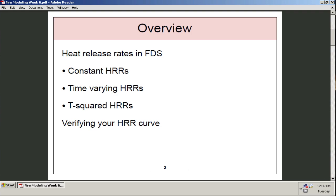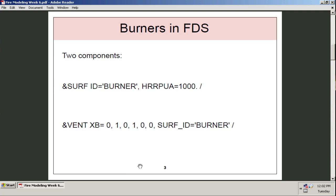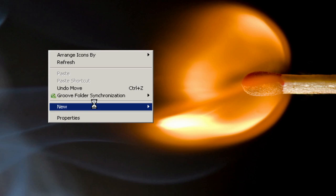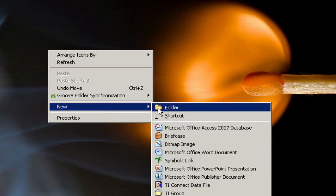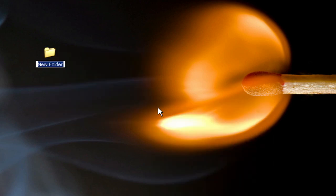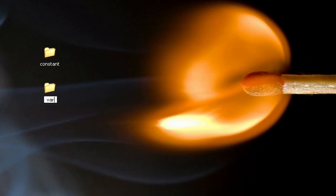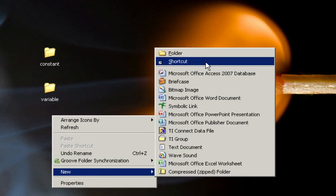I want to do a little bit of setup in the beginning here. First thing I want to do is make a few new folders on the desktop just to organize our three cases. So I'm going to make three new folders. The first I'll name constant. The second folder I'll name variable. And the third folder I will name T squared.